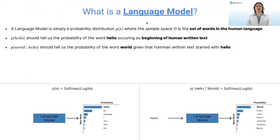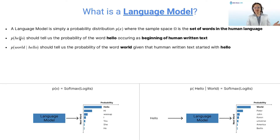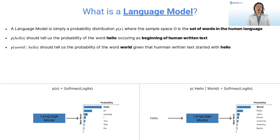Now we can better understand language models. A language model is simply a probability distribution where the sample space Omega is the set of words in a human language — or the vocabulary the model was trained on. So P(hello) tells us the probability of a sentence starting with 'hello.' And P(world | hello) tells us the probability of the word 'world' occurring given that the text started with 'hello.' A language model is simply modeling the distribution of words in a human language, and it can also model conditional dependencies when a given token or word has already appeared.